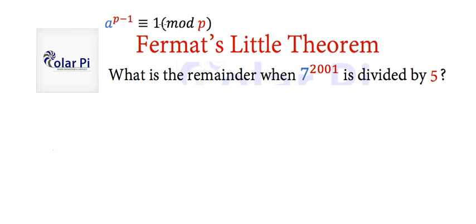Cool. So applying Fermat's Little Theorem once, we can write the following: 7 to the 4th is congruent to 1 mod 5.